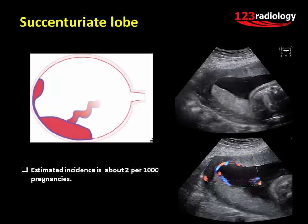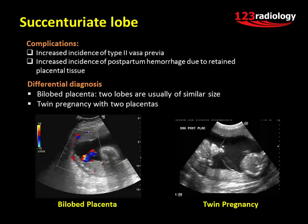A succenturiate lobe is a variation in placental morphology in which a smaller accessory placental lobe is separate from the main disc of the placenta. There can be more than one succenturiate lobe. The estimated incidence is about two per 1,000 pregnancies. On ultrasound it is seen as a smaller separate lobe of similar echo texture to the main placental disc. It is important to establish the location of any connecting vessels, and in particular to look for any vascular connection crossing the internal os — vasa previa. It has increased incidence of type II vasa previa and increased incidence of postpartum hemorrhage due to retained placental tissue.